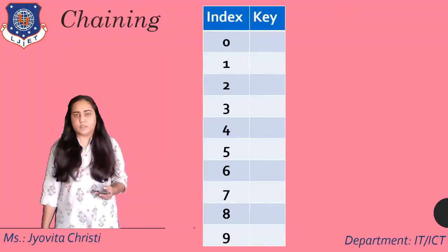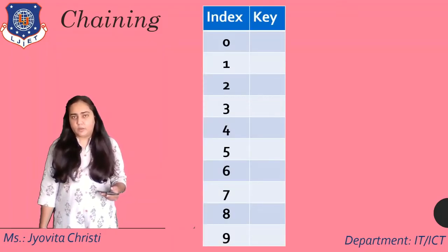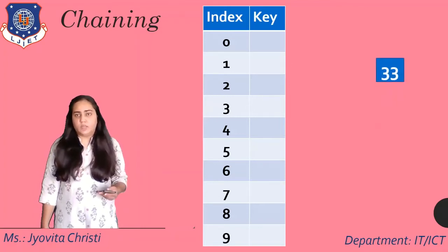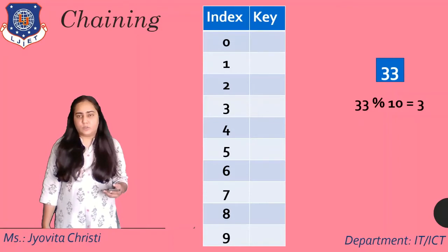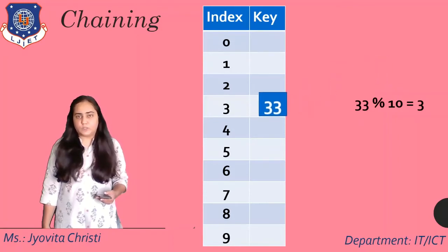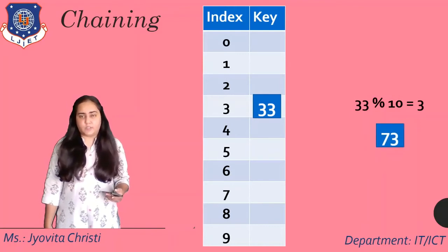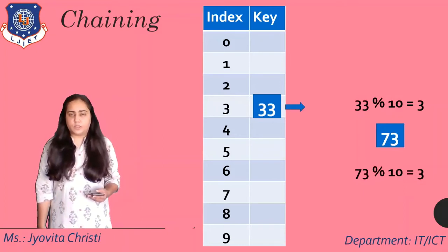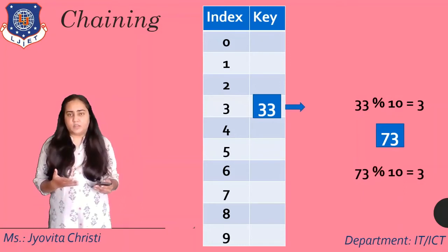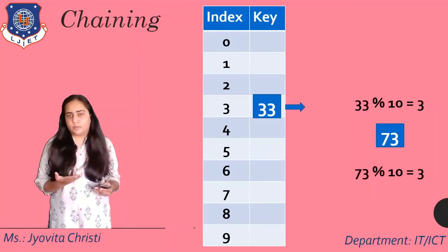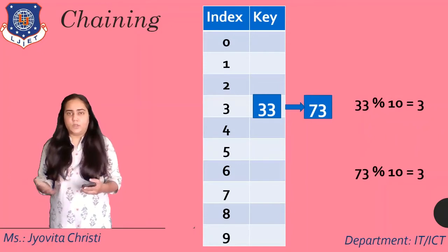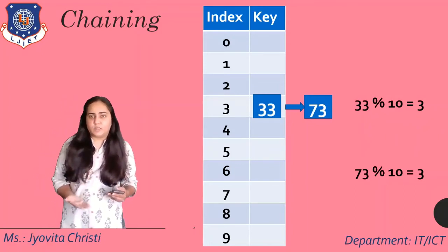The first such technique is a simple chaining method. In this technique, if you have a key, for example, 33, and let's just do modulo 10 and store 33 in position three. Then I have a key 73. And so I'm going to do 73 modulo 10 and store it next to 33 by forming a linked list in that position. So 33 will store the address of 73. It will point to 73 instead of creating a collision.